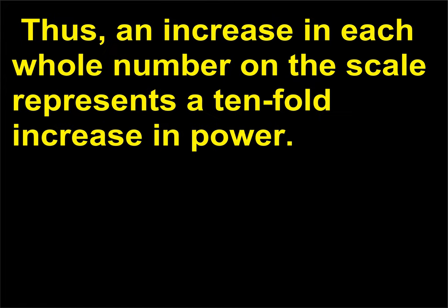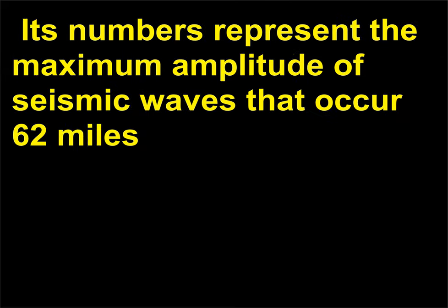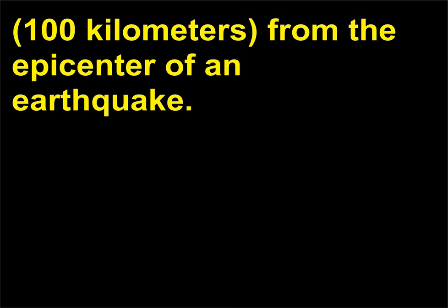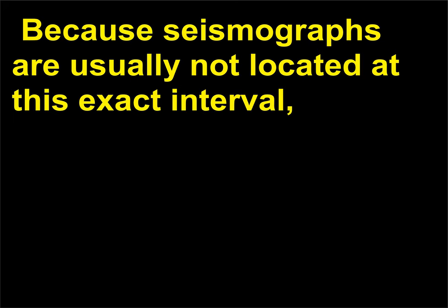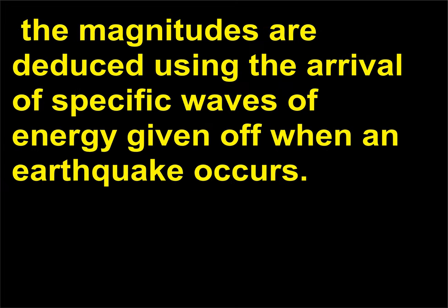Thus, an increase in each whole number on the scale represents a tenfold increase in power. Its numbers represent the maximum amplitude of seismic waves that occur 62 miles (100 kilometers) from the epicenter of an earthquake. Because seismographs are usually not located at this exact interval, the magnitudes are deduced using the arrival of specific waves of energy given off when an earthquake occurs.